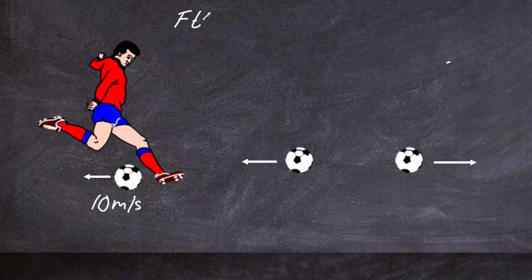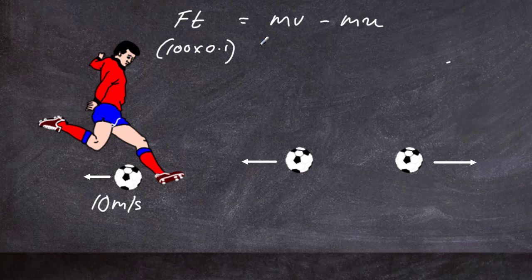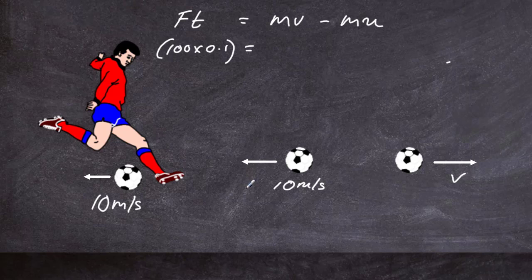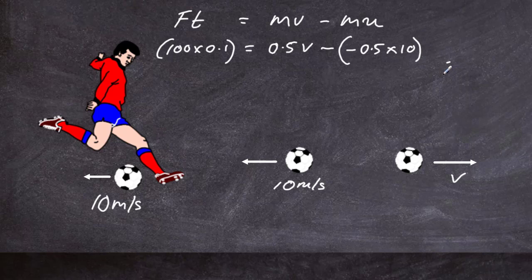We also assume the same impulse — the same force of 100 N and the same contact time of 0.1 s. So ft = mv − mu. v is the speed we're looking for, and the initial speed is 10 m/s coming towards the footballer — that's to the left, so it's negative. We have to be very careful here because momentum is a vector. The final velocity is 0.5v, and the initial momentum is −0.5 × 10.